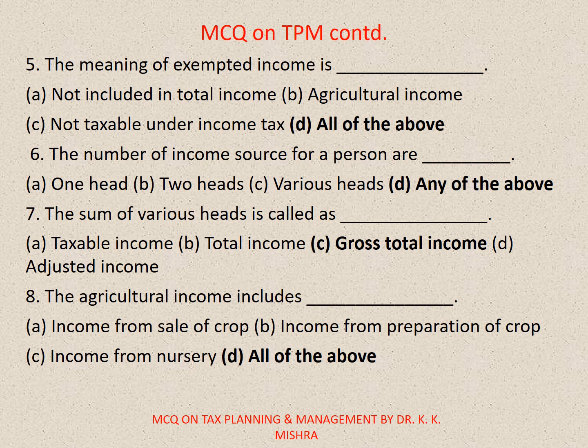Question 8: The agricultural income includes — A. Income from sale of crops, B. Income from reparations of crops, C. Income from nursery, D. All of the above. The correct option is D. All of the above.